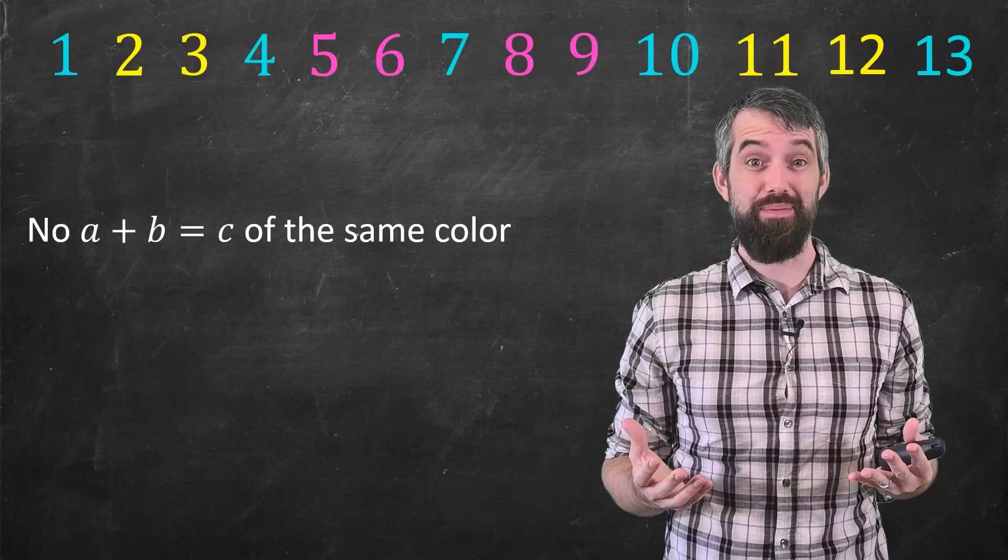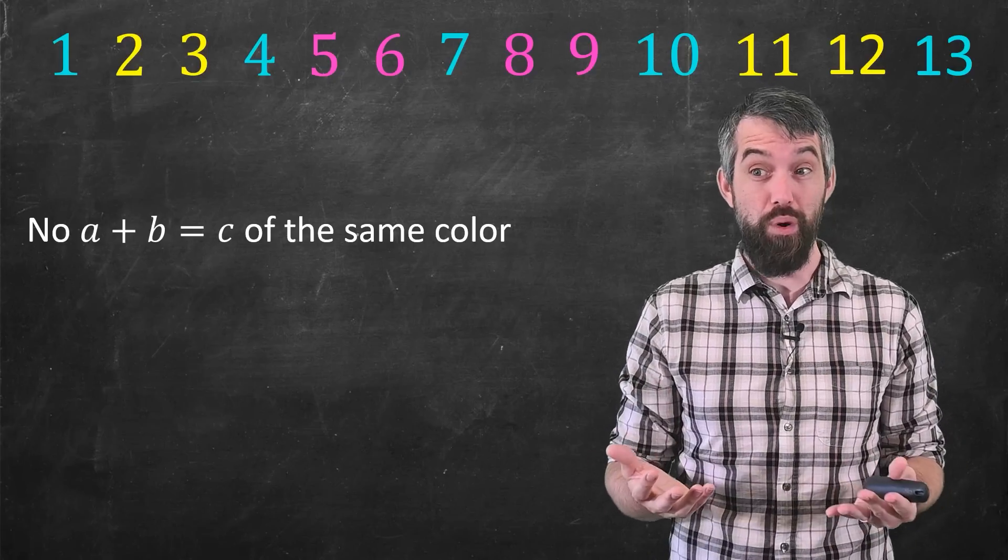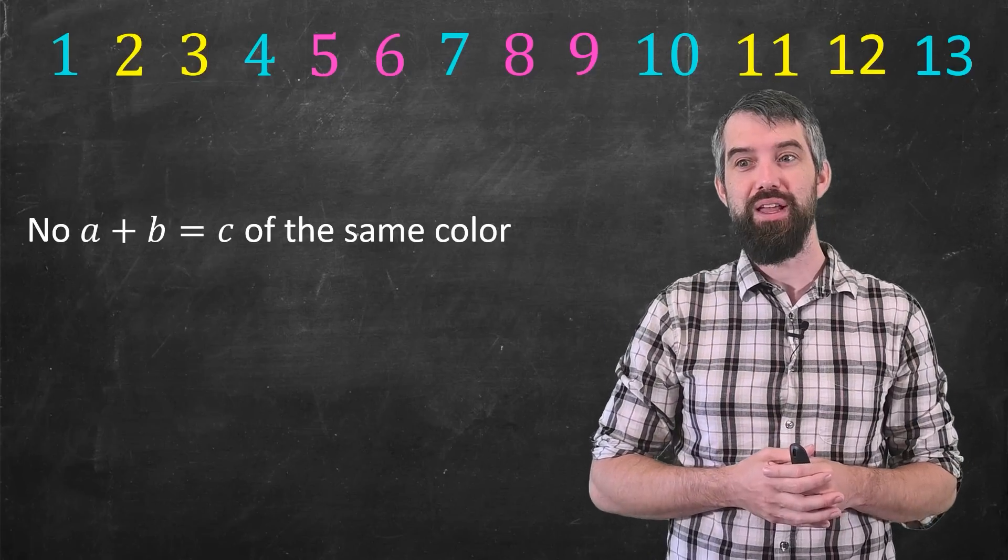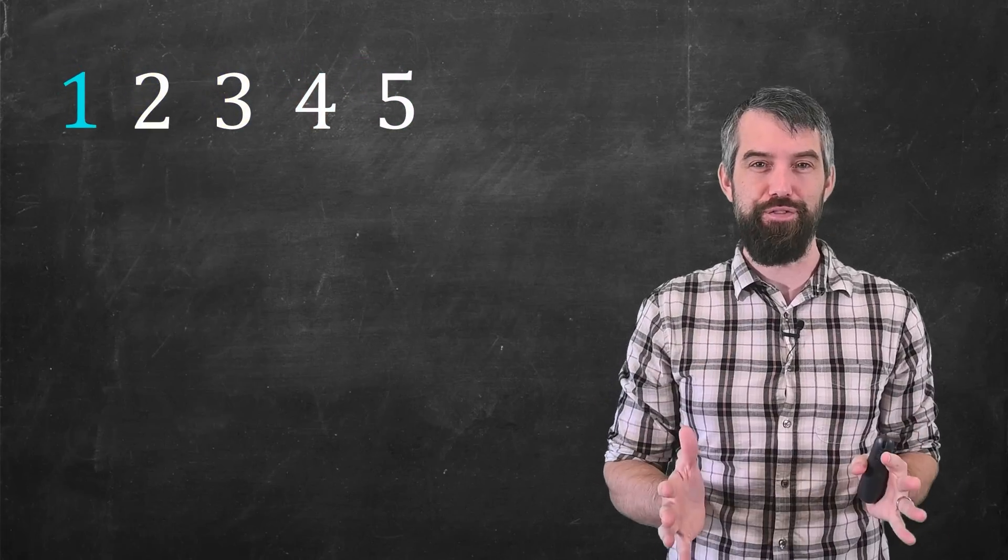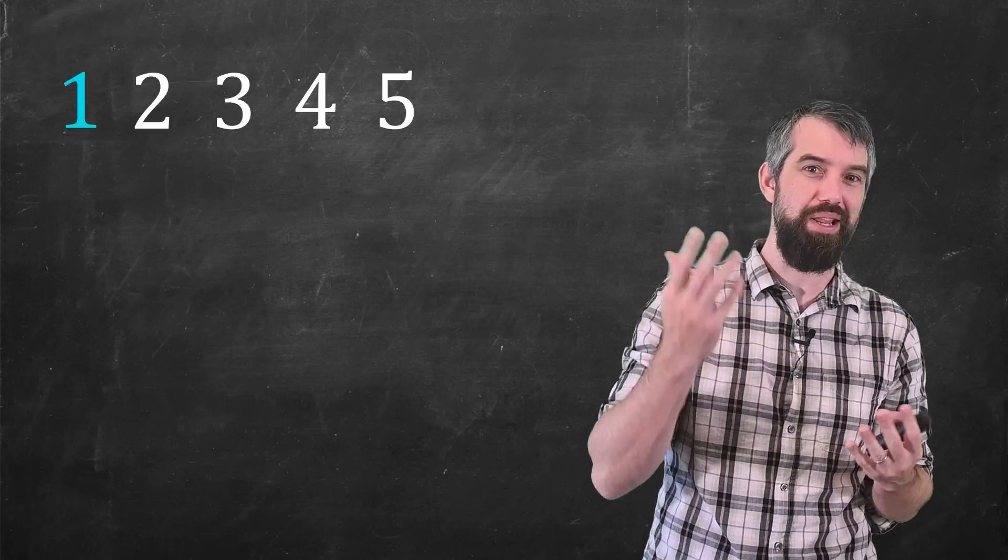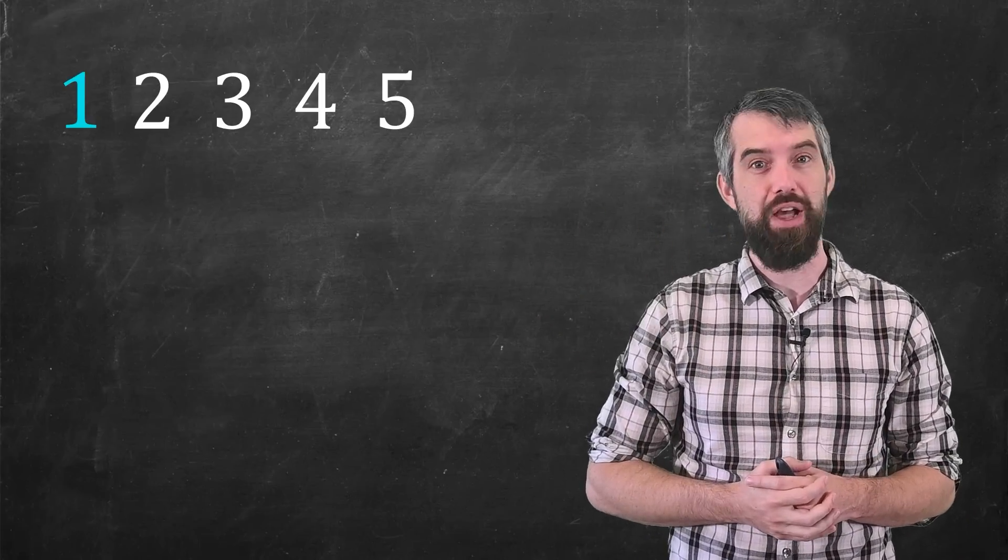And this immediately raises the question, like, here I've gone from 1 to 13. How big could I have gone before I was forced to have an A plus B equal to C? Well, to illustrate the idea, let's just look at the first five numbers. I've colored the first of them blue, could have been yellow, doesn't matter. And I'm going to imagine trying to use only two colors to cover these first five numbers.